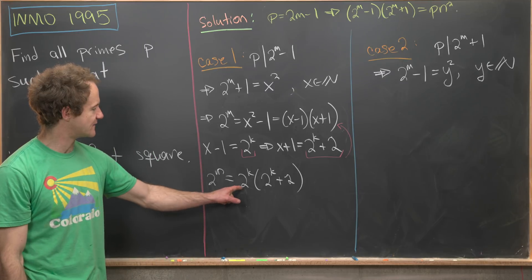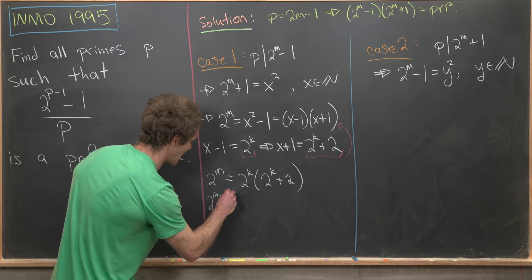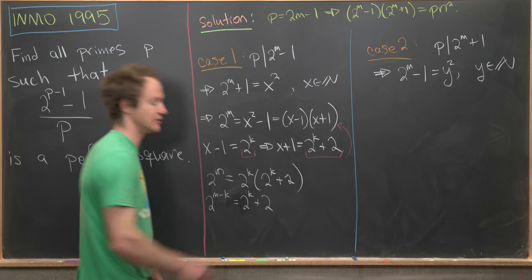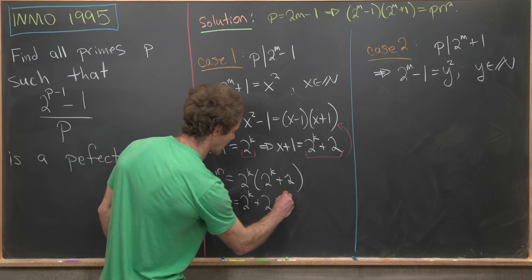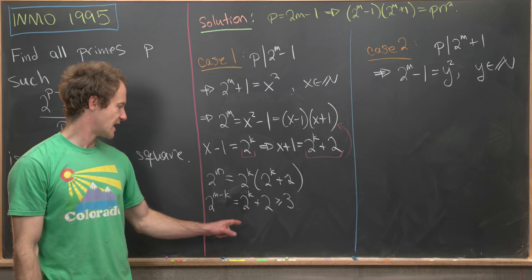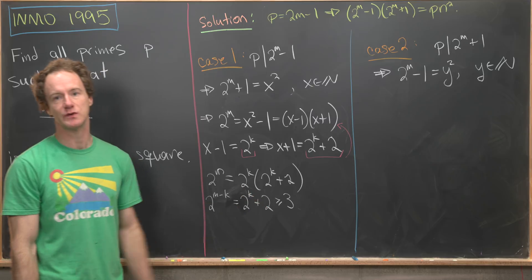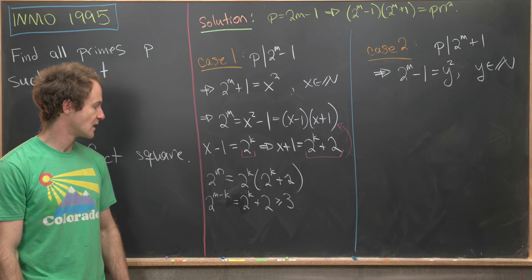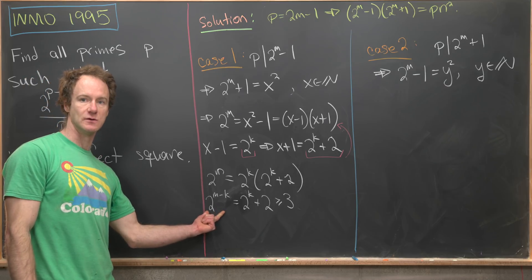Next up, we can divide both sides by 2^k. That'll give us 2^(m-k) = 2^k + 2. Next up, we want to notice that this thing is bigger than or equal to 3. That's because 2^k is going to be bigger than or equal to 1 and 2 is obviously equal to 2.